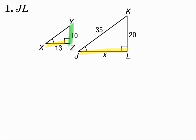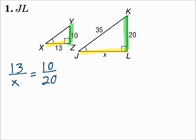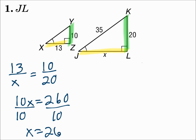10 on the left is between the right angle and the angle not marked, and that matches 20 on the right, which is between the right angle and the angle not marked. Make sure the sides you line up match properly based on the angles they're between. So, 13 over x equals 10 over 20. Cross multiply and solve: 10x equals 13 times 20, which is 260. Divide both sides by 10, and x is 26. Since segment JL is x, segment JL is 26.